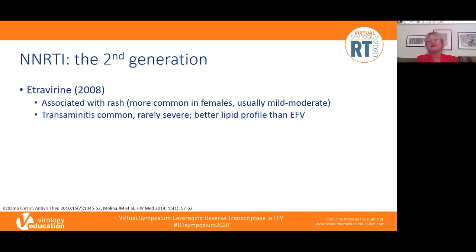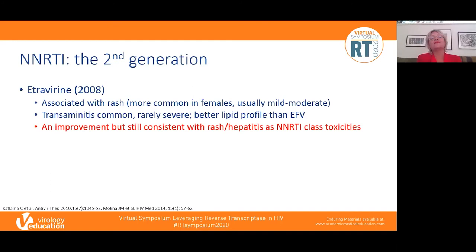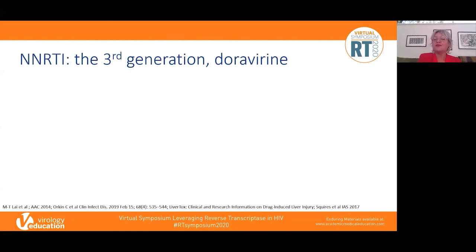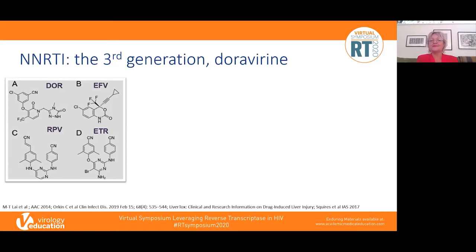Moving to second-generation NNRTIs: etravirine, licensed in 2008, is also associated with rash and transaminitis — less severe than nevirapine — and has a better lipid profile than efavirenz, though rash and hepatitis remained consistent with NNRTI class toxicity. Then rilpivirine in 2011 with much lower rates of rash — 2% compared to 13% on efavirenz in registrational studies — less transaminitis, relatively lipid neutral, and really no signature toxicity. This second-generation NNRTI really shifted away from classic NNRTI class effects.